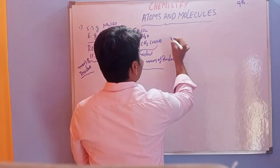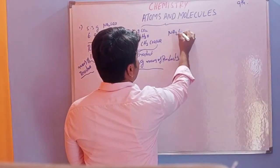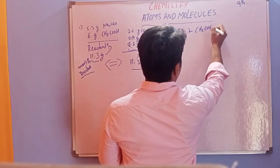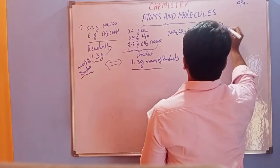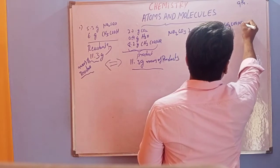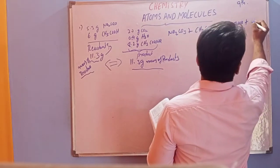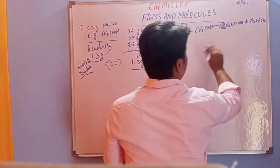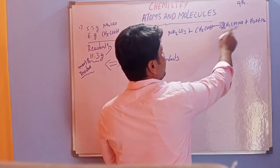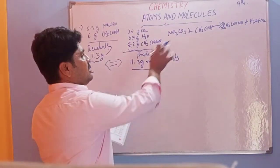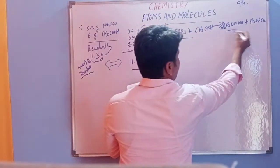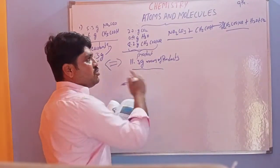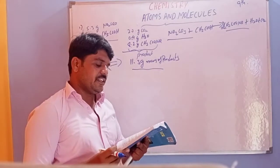We can also write the reaction: Na₂CO₃ + 2CH₃COOH → 2CH₃COONa + H₂O + CO₂. For balancing purposes, we take 2 as a coefficient. These are the reactants and these are the products, and reactants mass and products mass should be equal.